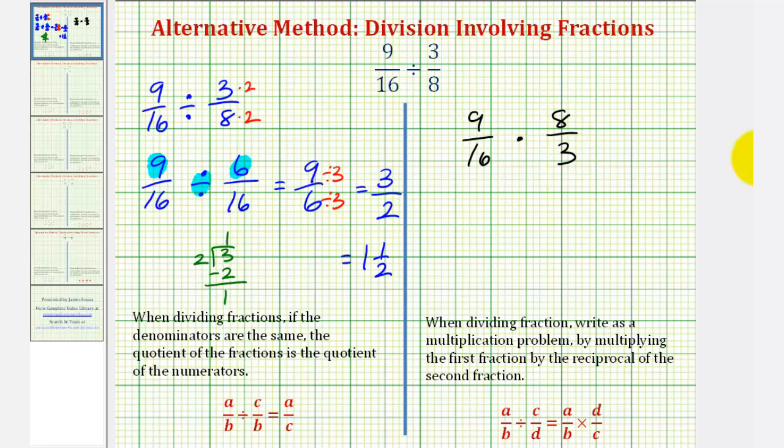Now before multiplying, we would want to simplify out any common factors between the numerators and denominators. Notice that 3 and 9 share a common factor of 3. There's 1 three in 3, and 3 threes in 9. 8 and 16 share a common factor of 8. There's 1 eight in 8, and 2 eights in 16.